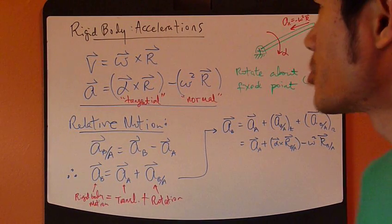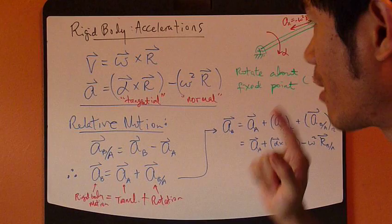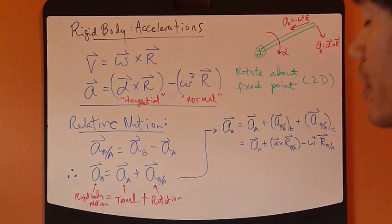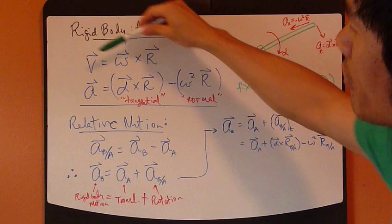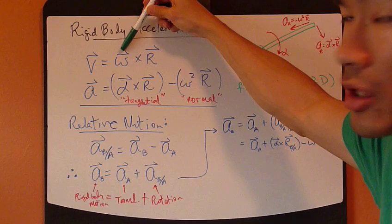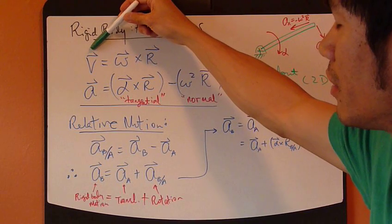Okay, so we looked at rigid body velocity. Now, let's look at accelerations. So far we have this velocity equation that relates the angular component to the linear component.